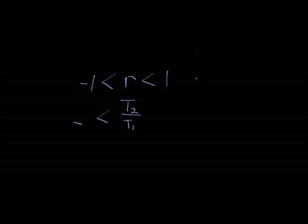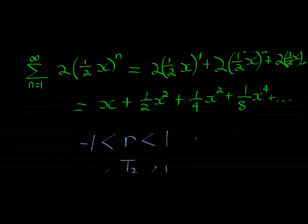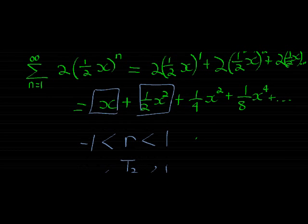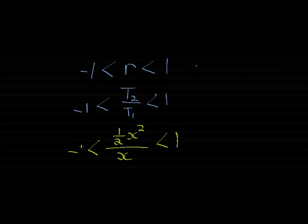And I have a formula for my constant ratio. It's my second term divided by my first term. It must be bigger than negative 1 and smaller than 1. And I have a formula for t2. This is t2. And that is t1. And we want that to be less than 1 but bigger than negative 1.